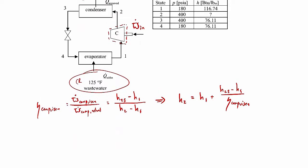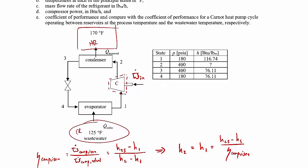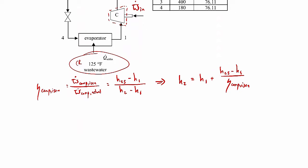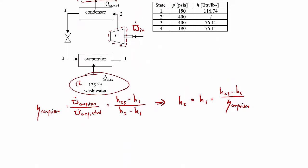We already know H1 from the table, and we know the isentropic efficiency is 80% from the problem statement. What we don't know is H2S. To find that, we use the fact that it's an isentropic process from state 1 to 2S. So P2S equals P2, which from the table is 400 PSIA, and S2S equals S1.